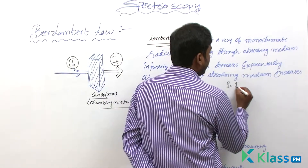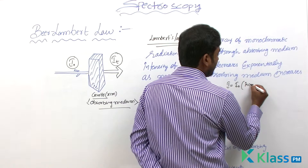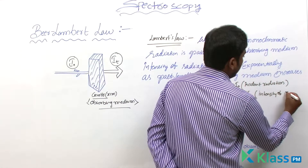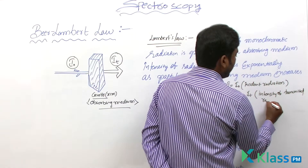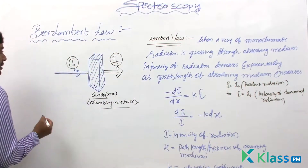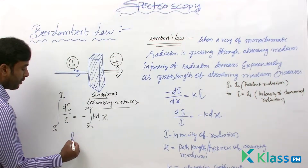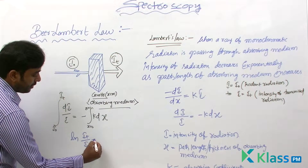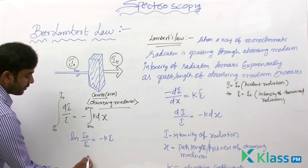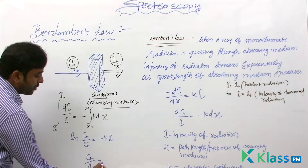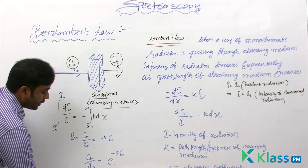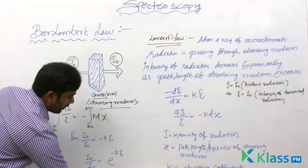We will integrate this between I = I0, which is the intensity of incident radiation, and I = IT, which is the intensity of transmitted radiation. Integrating between I0 and IT, we directly get: IT / I0 = −kl. Taking the antilog: IT / I0 = e^(−kl). Sending I0 to the other side: IT = I0 × e^(−kl).